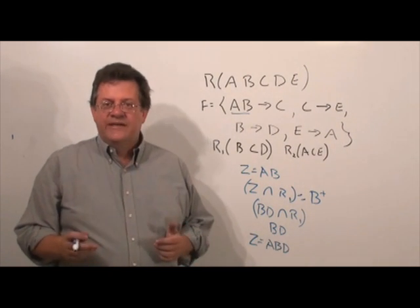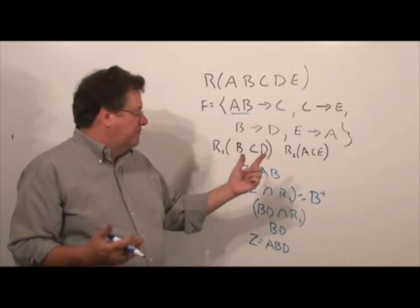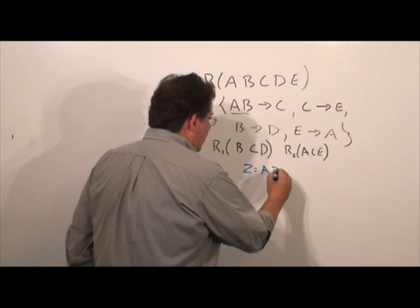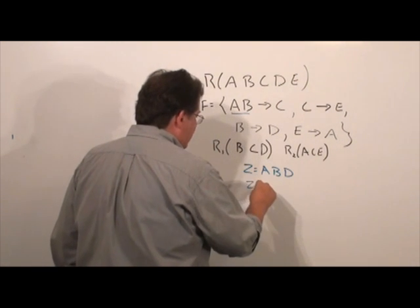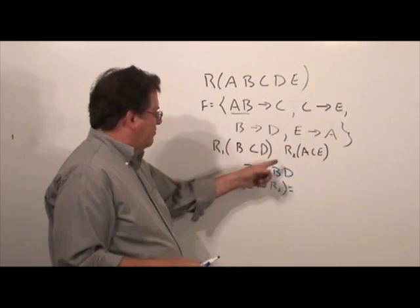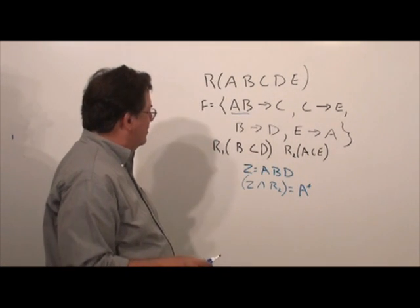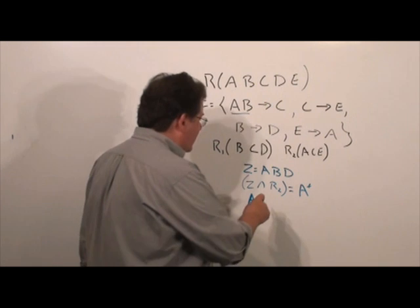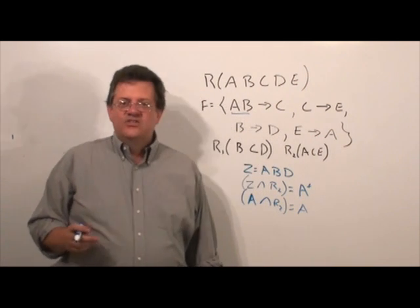Now, we've added one attribute here in terms of D, but we've not gotten the C, so we need to continue. So, we have looked at the first one, R1. We now look at the next subschema, R2. So, we pick up where we left off. Z is ABD, and we're going to do Z intersect R2. And what do they have in common? ABD, ACE is just A. We take the closure of A, which is just A, but we find out that A closure is just A. A intersect R2 is just A. So, we don't add anything to Z.